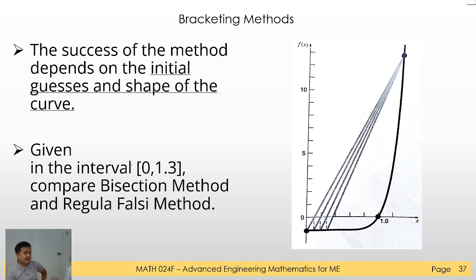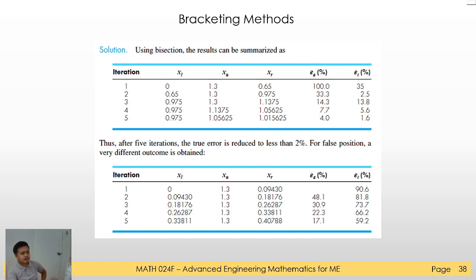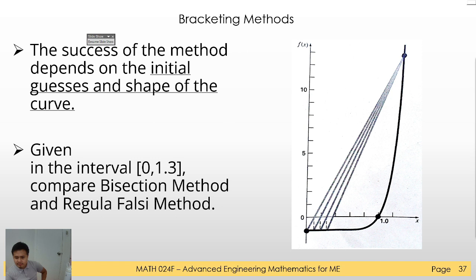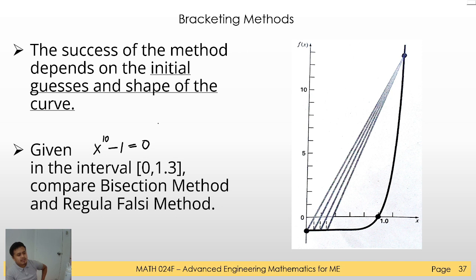Let's say we have a given interval of 0 and 1.3 and we want to find the solution of this function. The function is something like x to the 10th power equals 1, so analytically this will be just the 10th root of 1, which equals 1 — that is the solution.